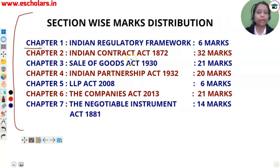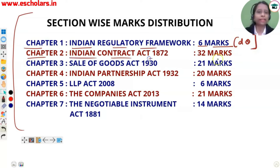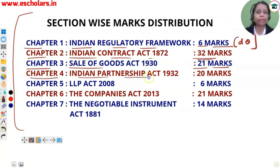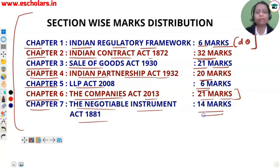Chapter 1 is Indian Regulatory Framework — this will come to 6 marks. There will be direct question and case study based questions; it will come to direct question. Chapter 2 is Indian Contract Act — this will come to 32 marks, with both direct and case-based. Chapter 3 is Sale of Goods Act — 21 marks. Chapter 4 is Indian Partnership Act — 20 marks. Chapter 5 is LLP Act — 6 marks. Chapter 6 is Companies Act 2013. Chapter 7 is Negotiable Instruments Act — 14 marks.